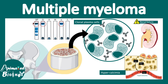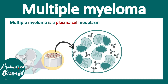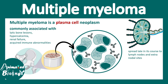In this video we'll be talking about multiple myeloma. Multiple myeloma is a cancer of the plasma cells. Plasma cells are transformed B cells that secrete a lot of antibody. Multiple myeloma is commonly associated with lytic bone lesions, hypercalcemia, renal failure, and acquired immune abnormalities. It starts in the bone marrow where plasma cells secrete one characteristic protein known as M protein — non-functional antibodies — and later it can spread into lymph nodes and extra-nodal sites.